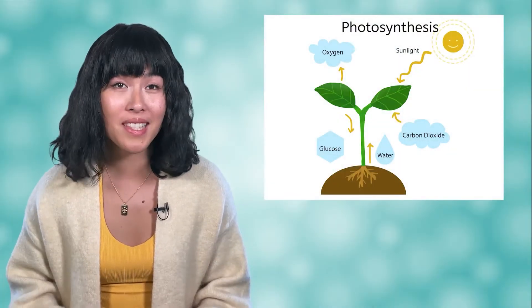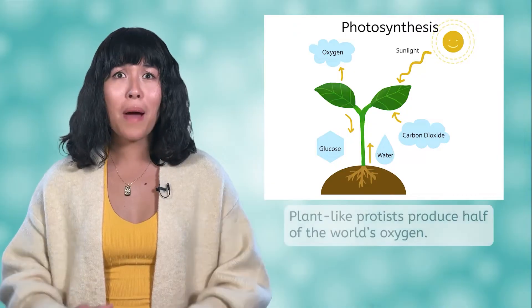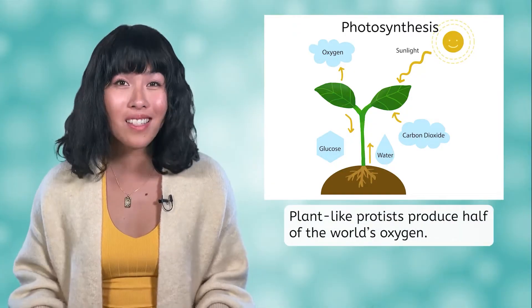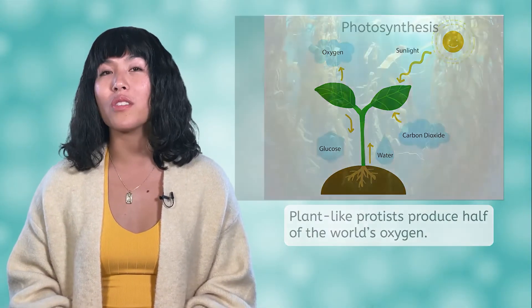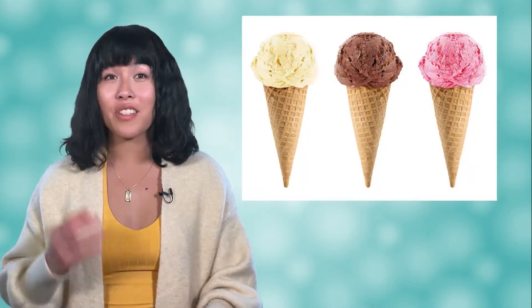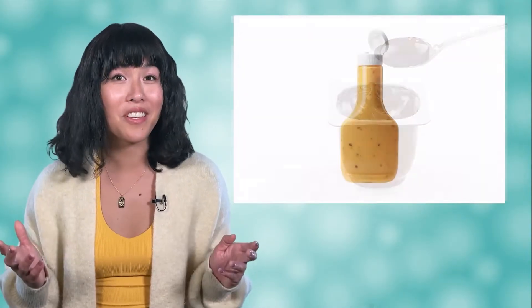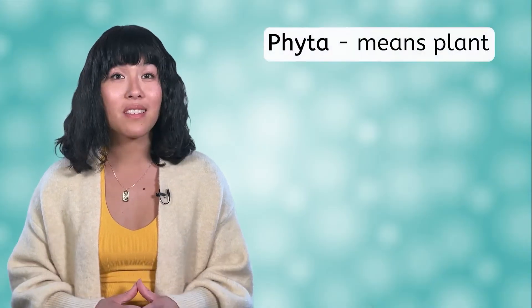The plant-like protists share a well-known trait with plants: they are autotrophs that do photosynthesis. Together, they produce about half of the world's oxygen. They are sometimes called the grasses of the seas, as they form the basis of many food chains in the oceans, and can even be found in prepared foods such as ice cream, pudding, and salad dressings. As we look at the different phyla of plant-like protists, notice that the phylum names all end with 'phyta,' which means plant.